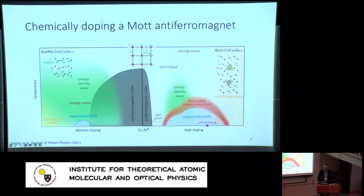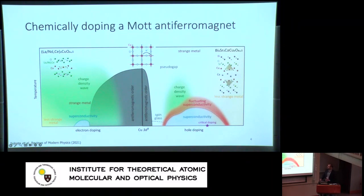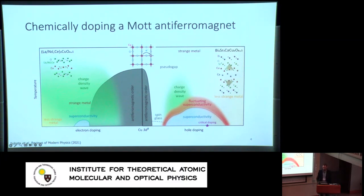Why would we want to do this? Why are we focusing on antiferromagnets? As we know from a very often shown picture, when you dope these systems you melt the antiferromagnetic insulating order of the parent compound, and many interesting phases emerge — such as superconductivity, charge density waves, strange metals, pseudogaps, and so on.